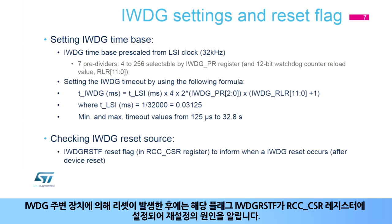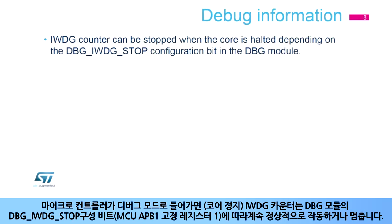Once a reset is generated by the IWDG peripheral, the corresponding flag, IWDG RSTF, is set in the RCC CSR register to inform the source of the reset. When the microcontroller enters debug mode with the core halted, the IWDG counter either continues to work normally or stops, depending on the DBG-IWDG stop configuration bit in the DBG module.